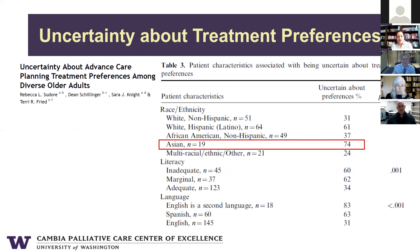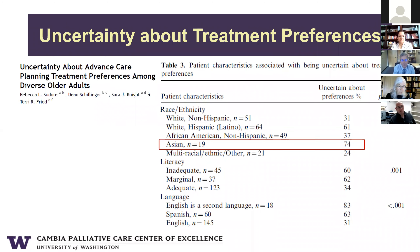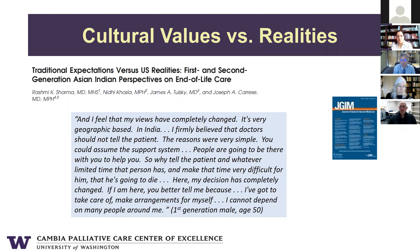This data highlights again the question of whether the differences we see in intensity of end-of-life care are reflective of preferences. In a study looking at uncertainty about advance care planning treatment preferences, the highest proportion of those uncertain about their treatment preferences were Asian Americans at 74%. This further supports the idea that much of what we're seeing is actually about ineffective communication and missed opportunities to better support patients in making decisions that align with their values and goals.